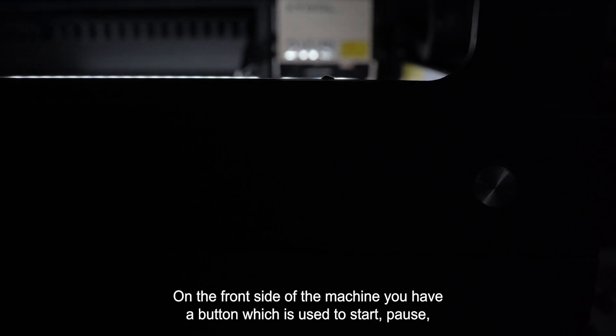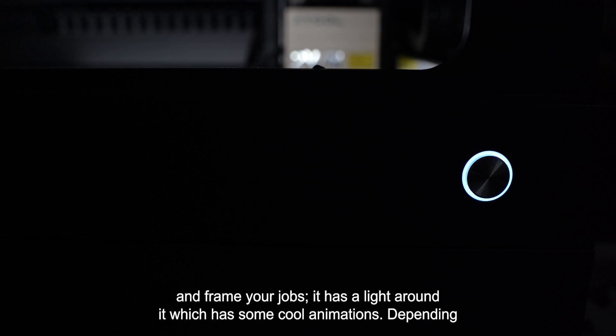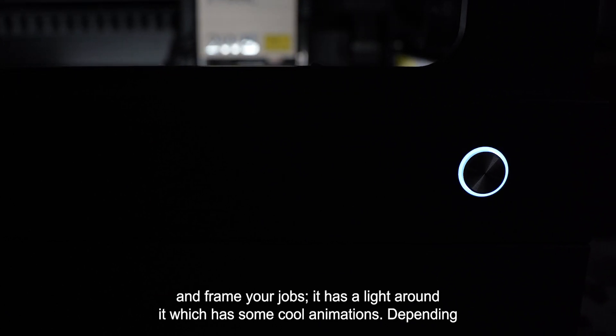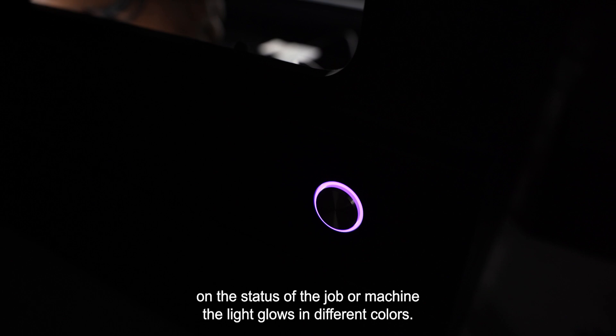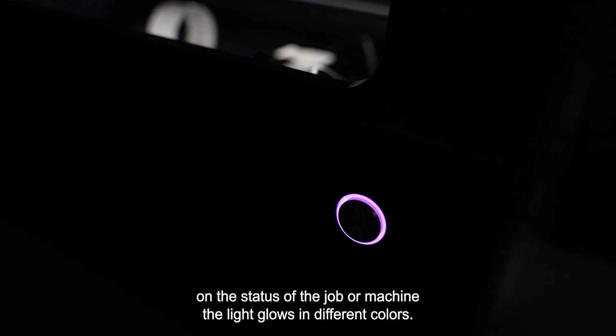On the front side of the machine, you have a button which is used to start, pause and frame your jobs. It has a light around it which has some cool animations. Depending on the status of the job or the machine, the light glows in different colors.